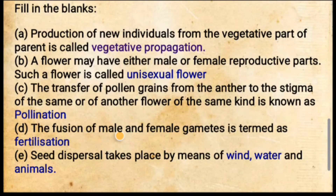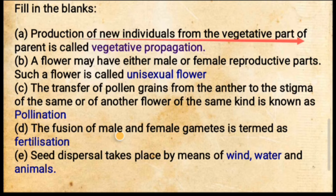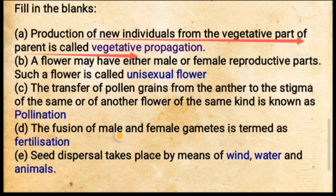Fill in the blanks. The first option is: Production of new individuals from the vegetative part of a parent is called dash. The vegetative part is used in the parent plant in order to grow a new individual, so the correct answer is Vegetative Propagation.